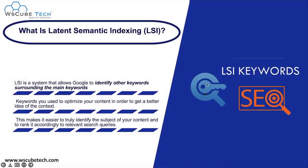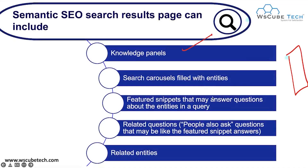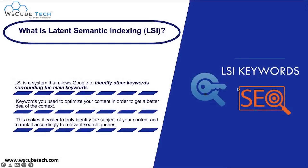Semantic SEO search results also include search console filled with entities, featured snippets that may answer questions about the entity in a query, and related questions — that is the 'people also ask' related entities. Next is latent semantic indexing, which we call LSI. LSI is a system that allows Google to identify other keywords surrounding the main keyword — the keywords you use to optimize your content — in order to get a better idea of the context. This makes it easier to truly identify the subject of your content and rank it according to the relevant search query.